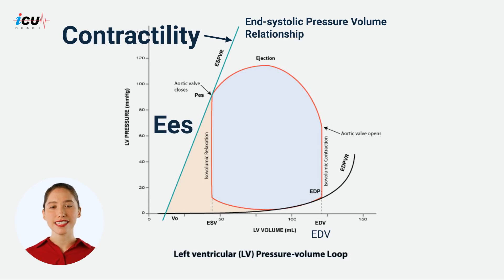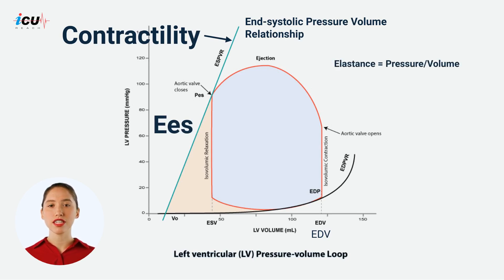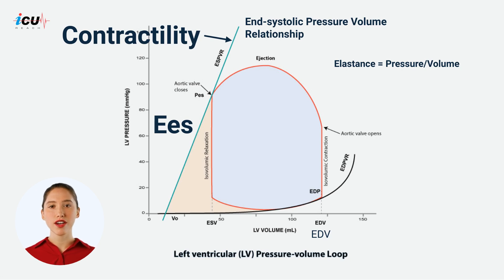is an index of end systolic elastance, indicated by change in pressure divided by change in volume, and provides information on contractile function of the heart.